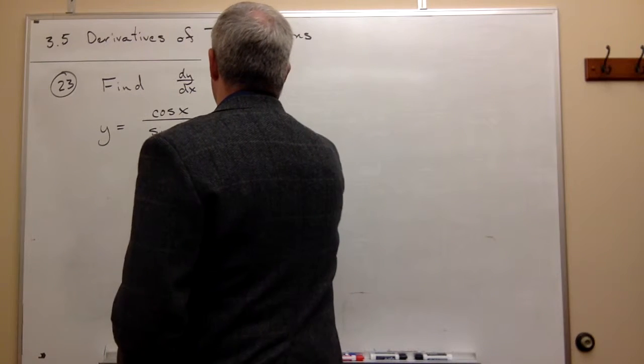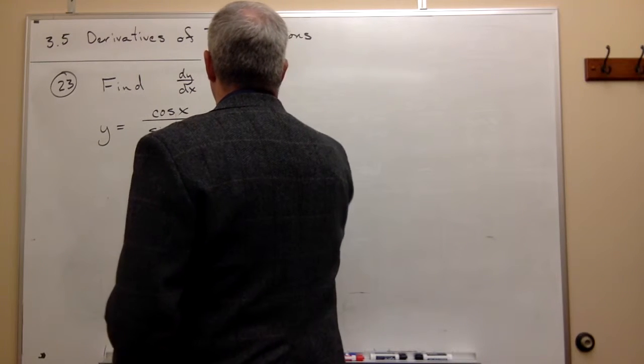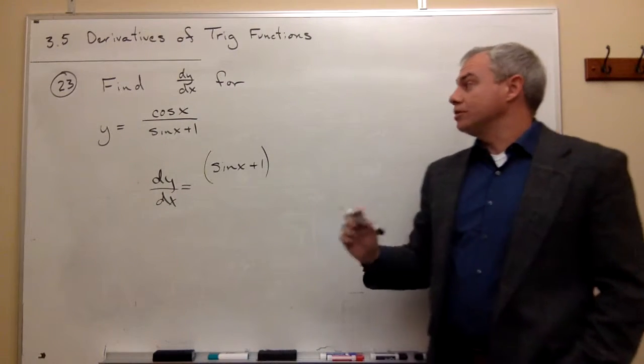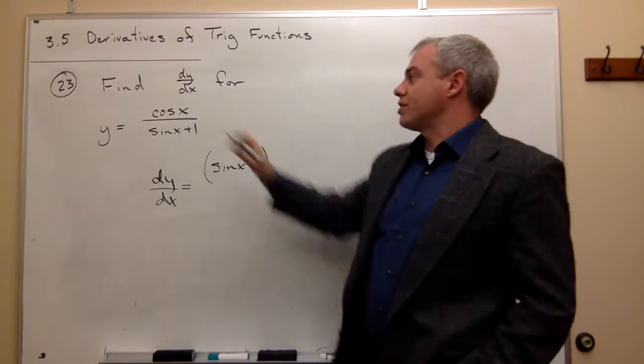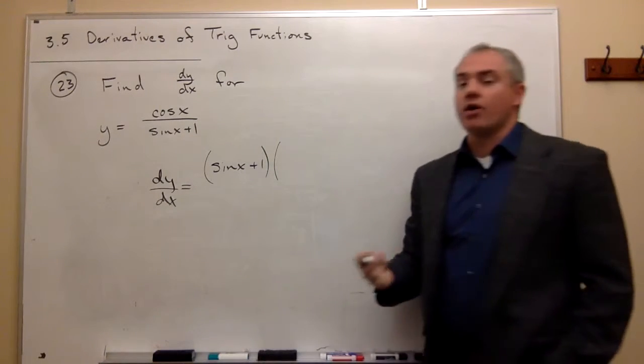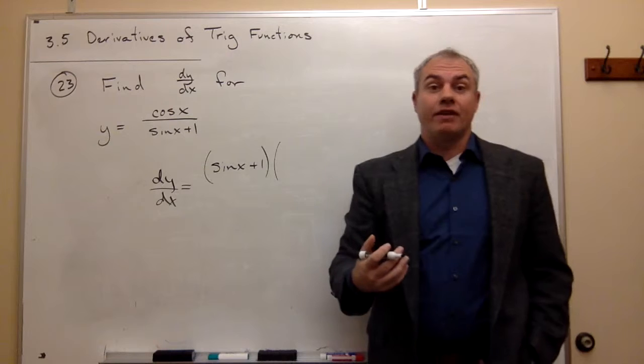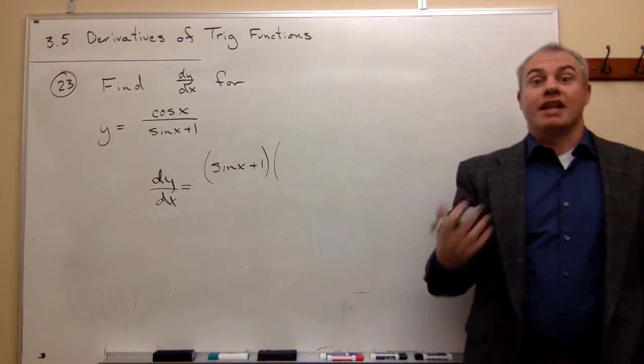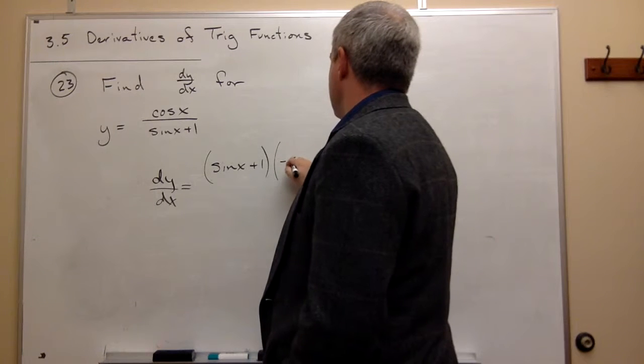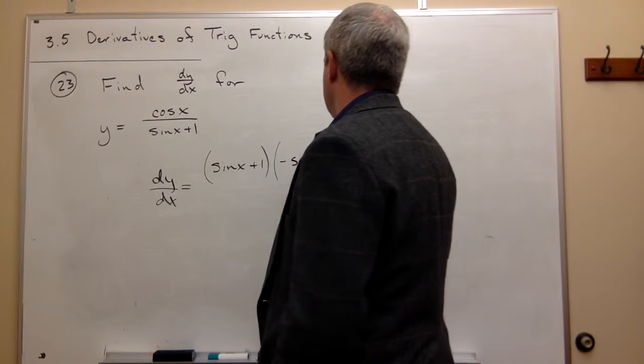On the bottom, I have sine of x plus 1. So I write the bottom down first. And then I multiply by the derivative of what's on the top. So I want to multiply that by the derivative of cosine. And the derivative of cosine is negative sine. So the derivative of cosine of x is negative sine of x.